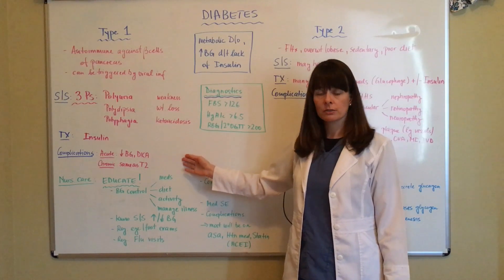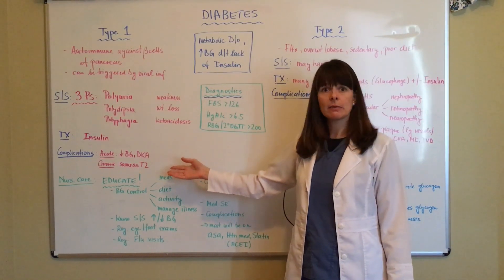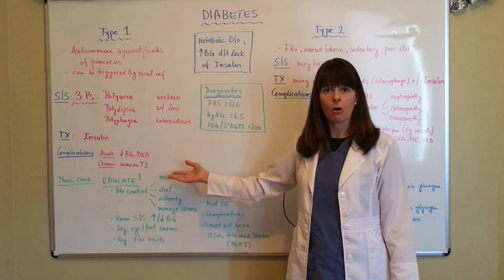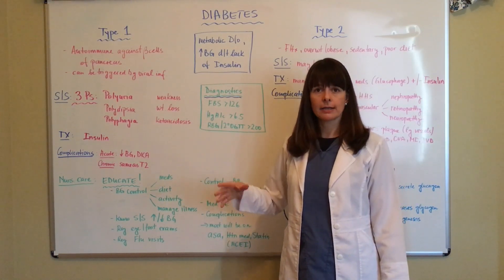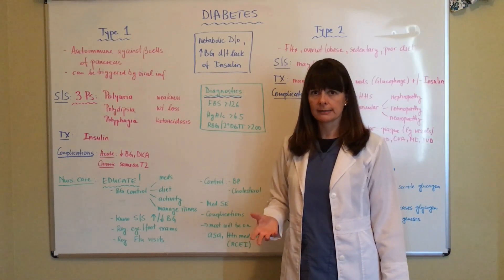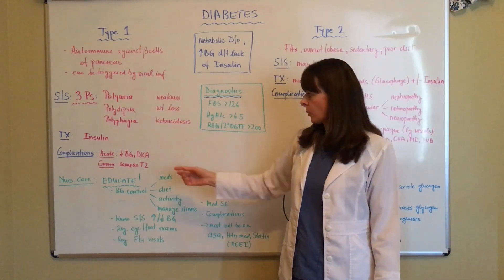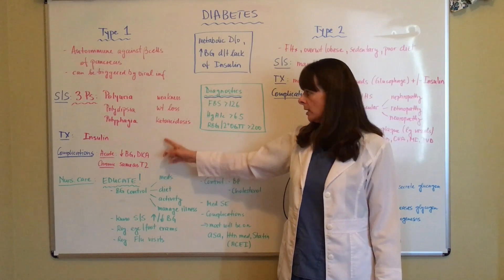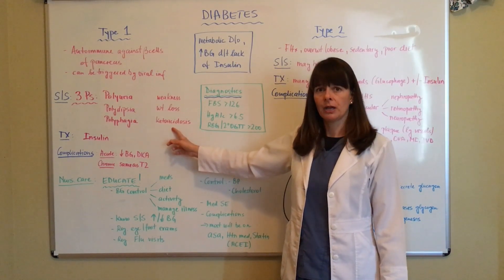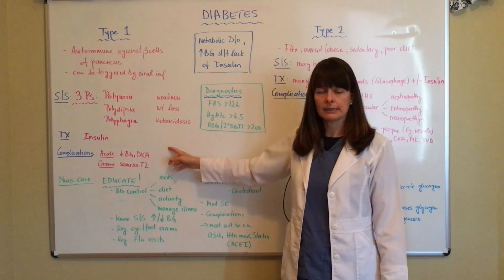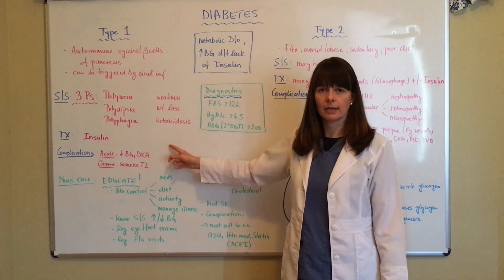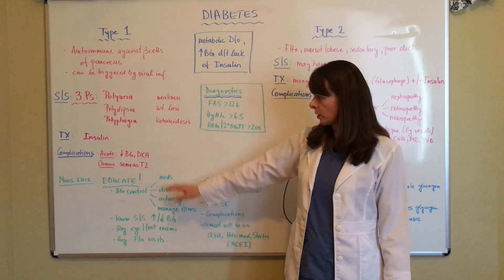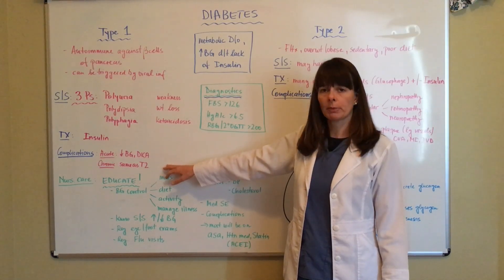Complications for type 1 diabetes are hypoglycemia. What if the blood sugar goes low and the patient has no insulin? We need to educate our patients for the signs and symptoms of that, as well as diabetic ketoacidosis, DKA, which I just explained. Watch a separate video about DKA, how it happens, and treatment options. And then chronic complications, we'll cover those more when we discuss type 2 diabetes.